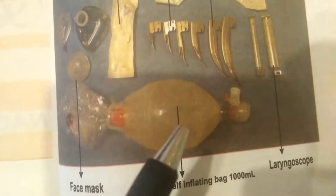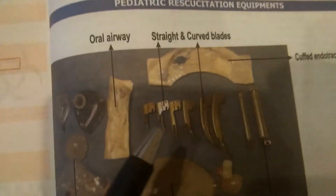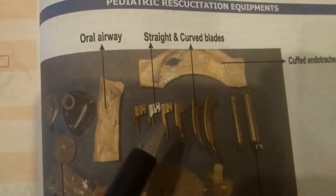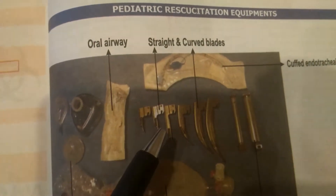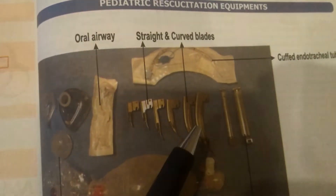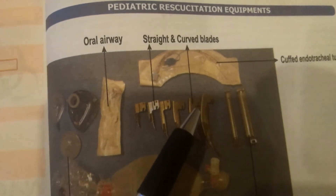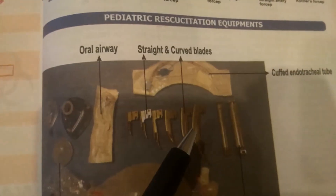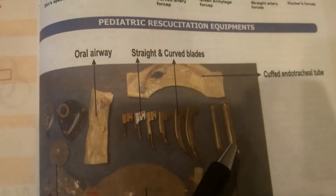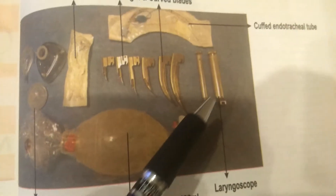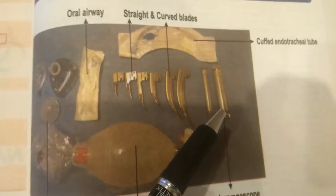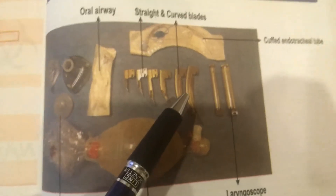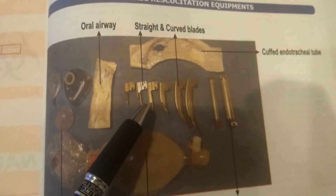Now see here — these are the straight blades and this is a curved blade. These are used together with this instrument, which is known as a laryngoscope. To see inside, with the laryngoscope we put in this curved blade or straight blade.